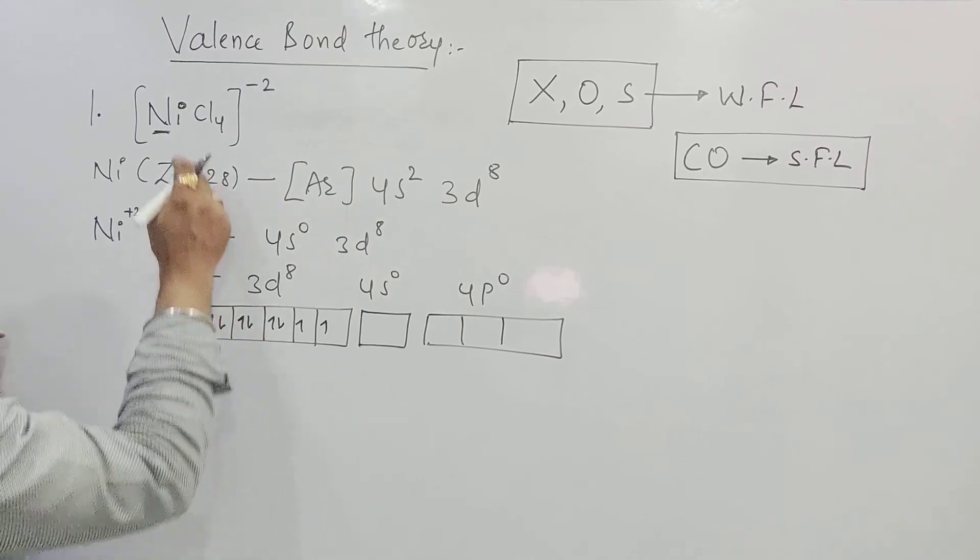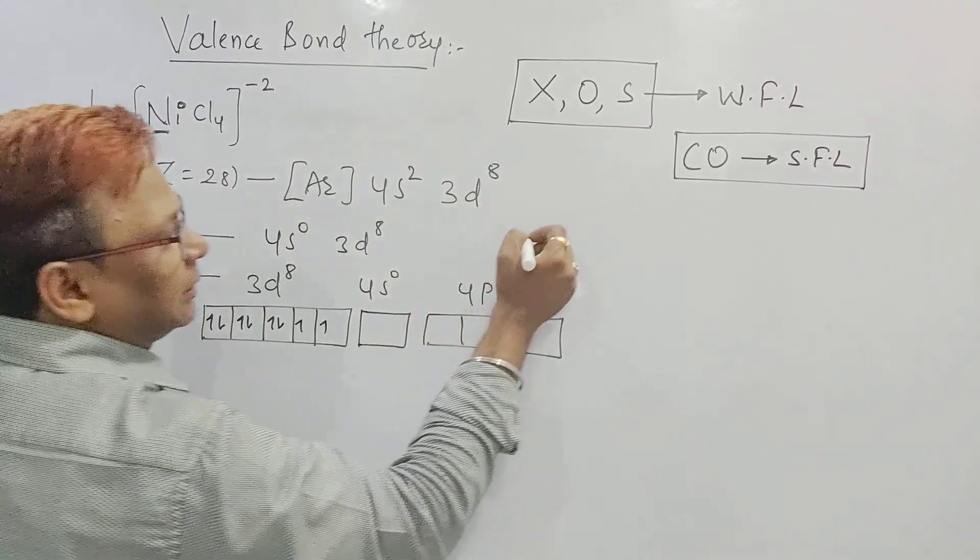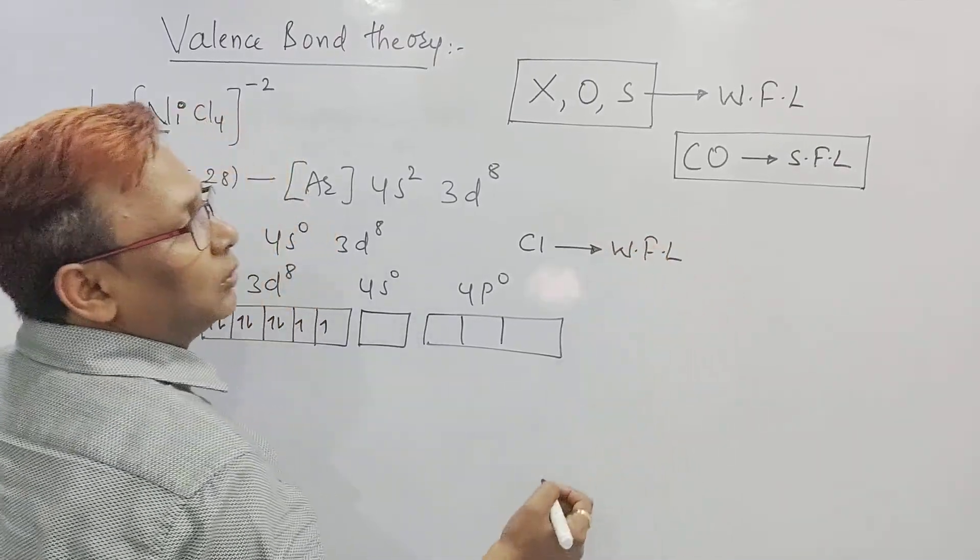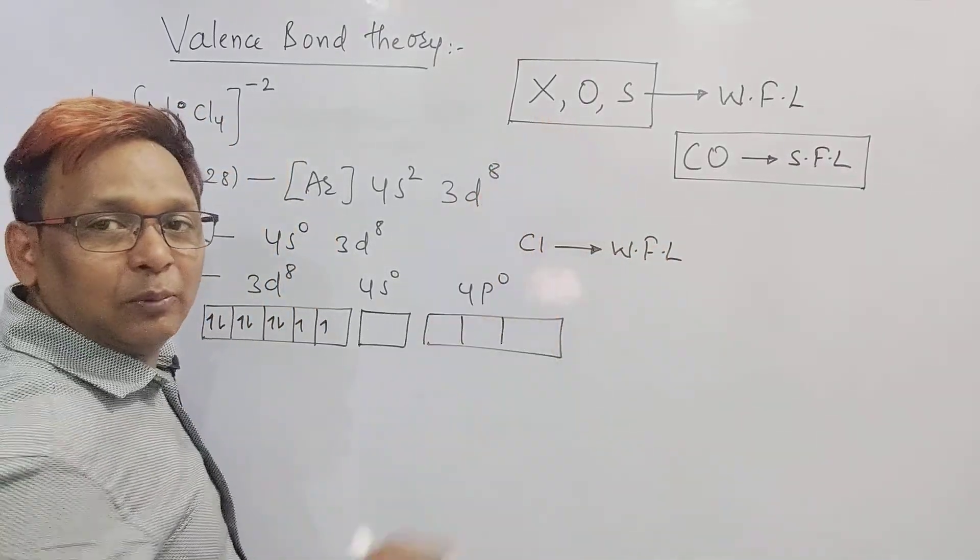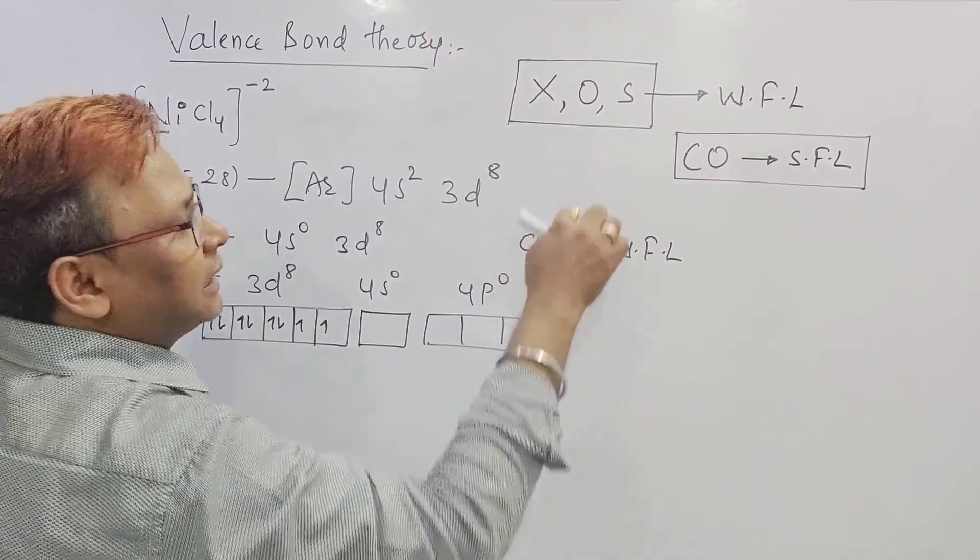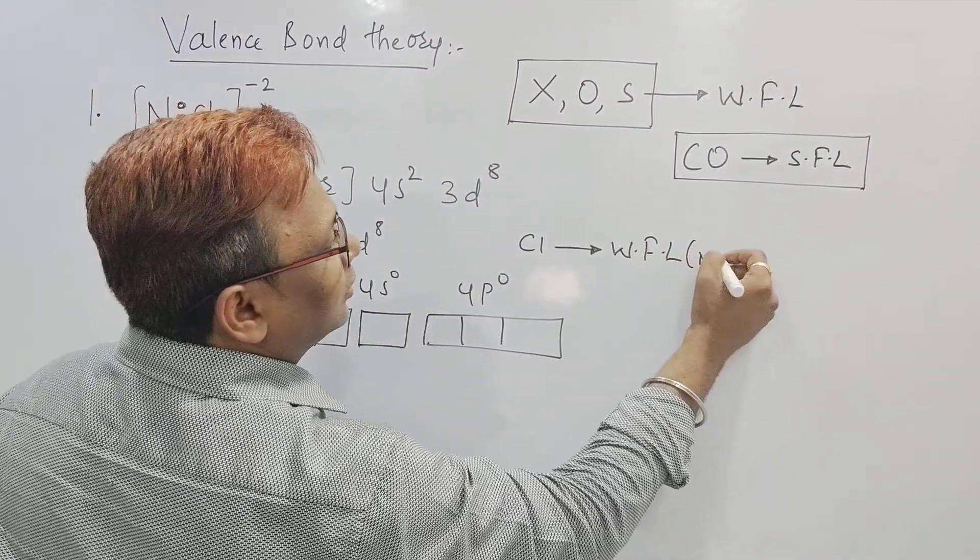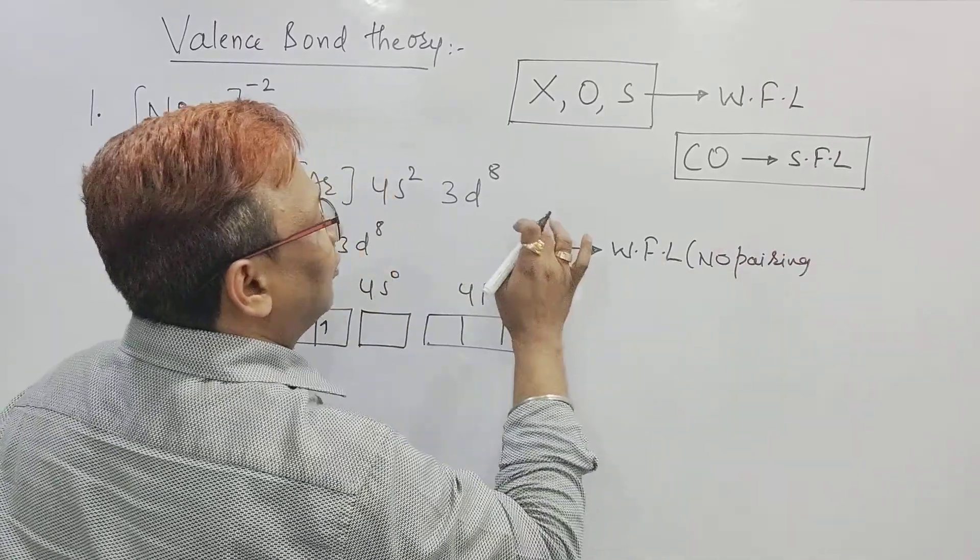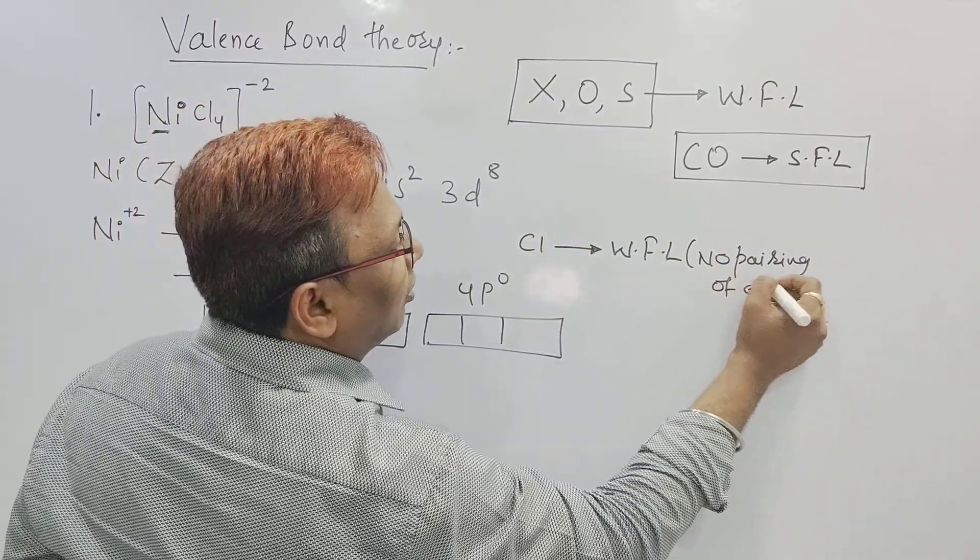Now one more part. Cl is a Halogen. Can you tell me this Halogen is a weak field ligand or strong field ligand? Obviously it is a weak field ligand. If it is a weak field ligand means I should say no pairing of electrons.